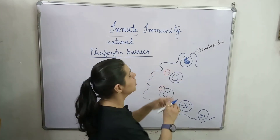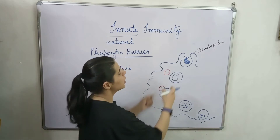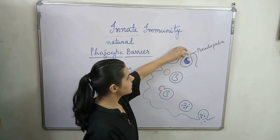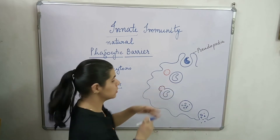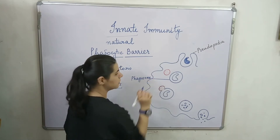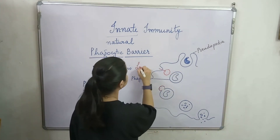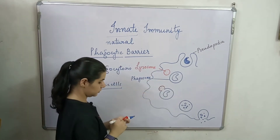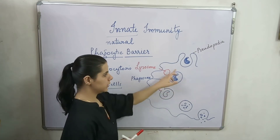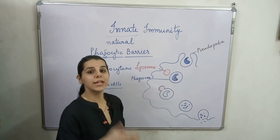The phagocytic cell membrane forms invaginations called pseudopodia, and these surround our pathogen. As soon as they join together, this is called our phagosome. The red structure here is the lysosome, and when the phagosome and lysosome fuse together, it is called phagolysosme, and the pathogen is broken down.